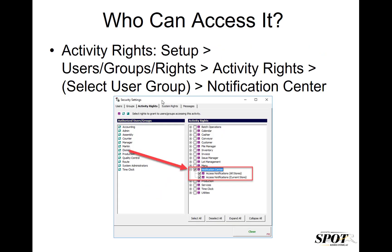To control who can access the Notification Center, go to Setup, Users, Groups and Rights, Activity Rights, select your user group — in this case I've chosen Owner — and then choose Notification Center. You can choose to give the user group access to the current store or access to All Stores.